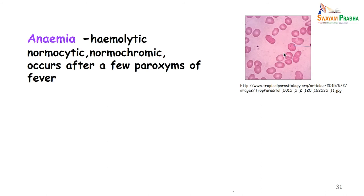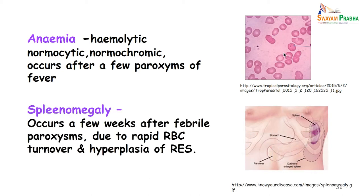The anemia is hemolytic, normocytic, normochromic, and occurs after a few paroxysms of fever. Splenomegaly occurs a few weeks after the febrile paroxysm, as a result of rapid RBC turnover and hyperplasia of the reticular endothelial system.